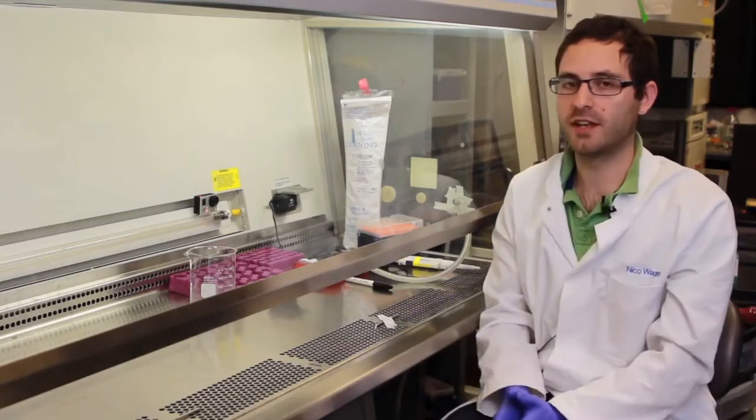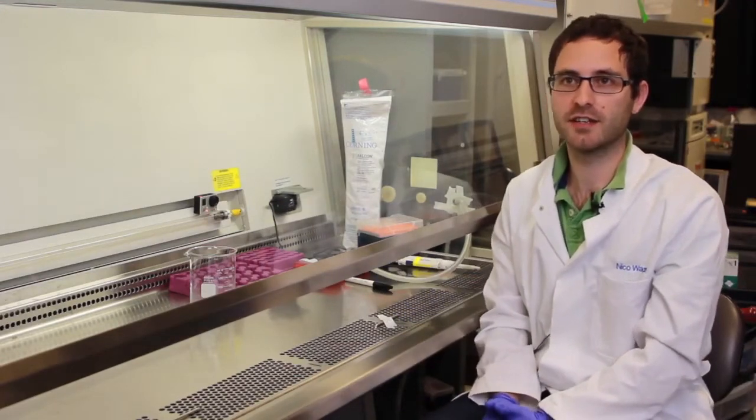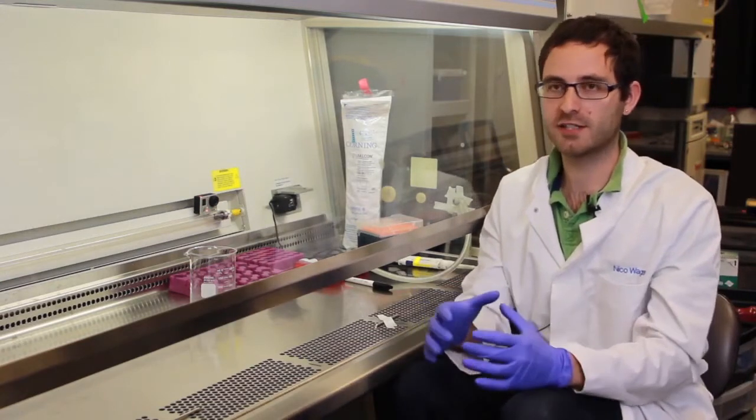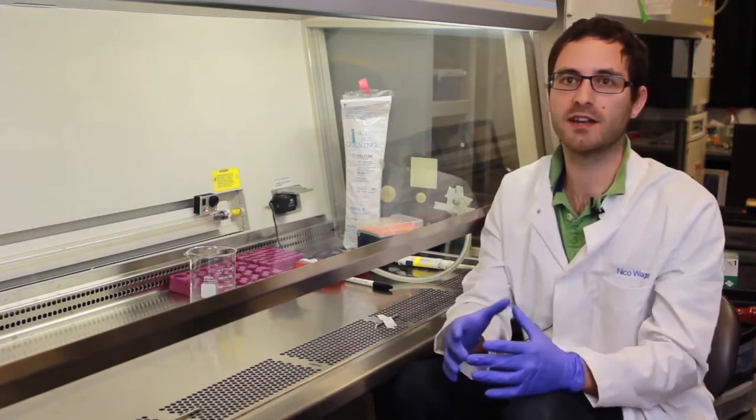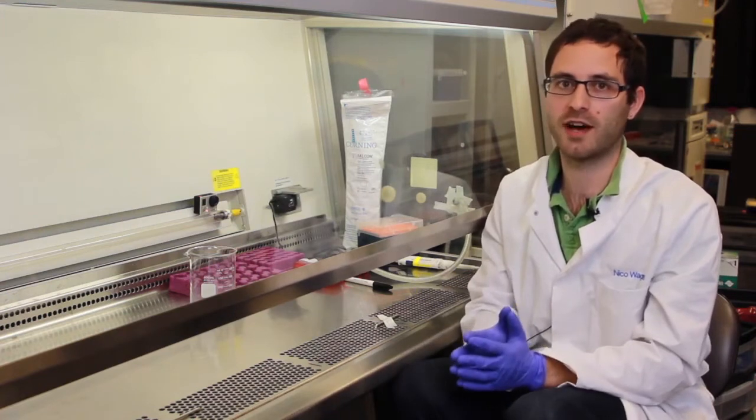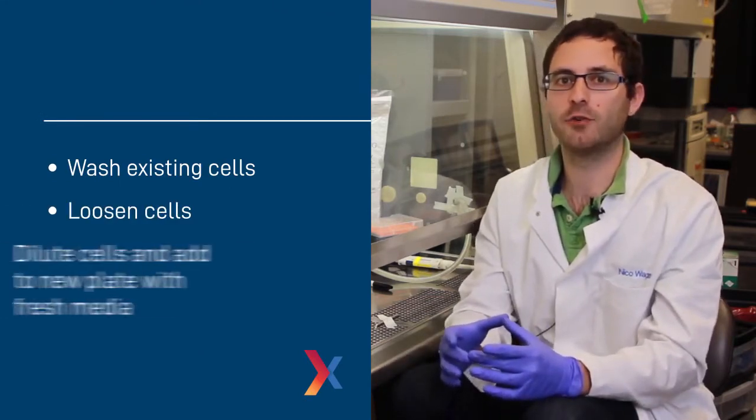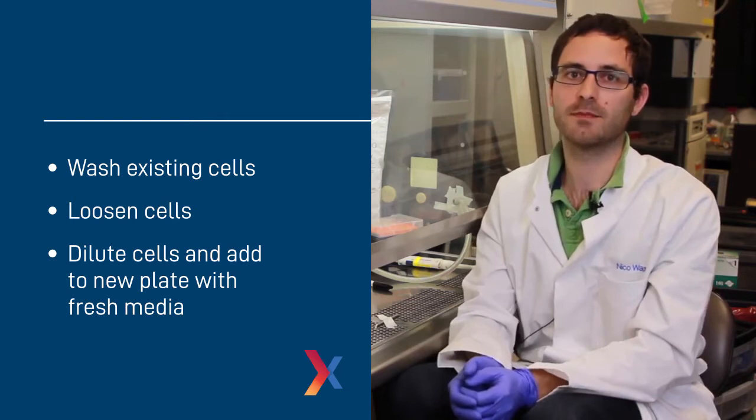What we'll be doing today is a basic cell passaging procedure. Cell passaging is important for taking your cells which keep on growing on the plate and diluting them so they don't overgrow and die. The quick overview of what happens is you wash the existing cells, loosen them from the plate, and dilute them onto a new plate in fresh medium.